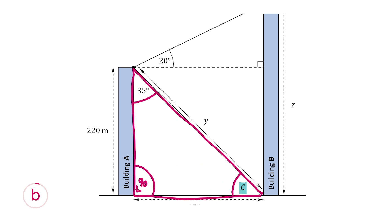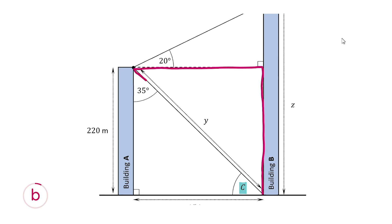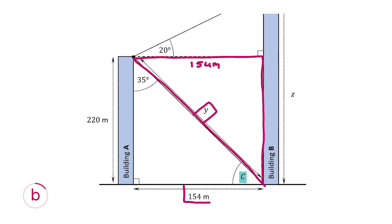We're using Pythagoras's theorem, so I'm working with this triangle now. We're looking for Y — that's the unknown. We know that the horizontal distance between building A and building B is 154 meters. We also know that the vertical side is 220 meters because it's the same height as building A. This is a right angle, as we're told in the question. So let's work out Y using Pythagoras's theorem.